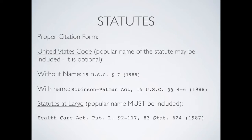Now if you add the name, you simply put the name with a comma. This one happens to be the Robinson-Patman Act, comma, at 15 U.S.C. In this particular one we're saying it's sections 4 through 6, so you notice we put two section symbols — that's why there are two of them, because we're talking about multiple sections. Again it's 1988. That is optional to add the name.